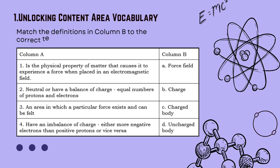Now let's unlock our content area vocabulary. Match the definitions in Column B to the correct term in Column A. Number 1: the physical property of matter that causes it to experience a force when placed in an electromagnetic field. Number 2: neutral, or having a balance of charge — equal numbers of protons and electrons. Number 3: an area in which a particular force exists and can be felt. Number 4: having an imbalance of charge — either more negative electrons than positive protons, or vice versa.